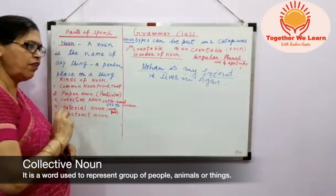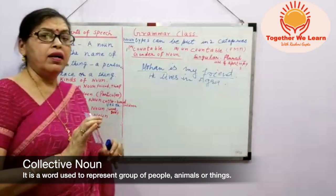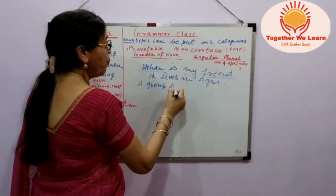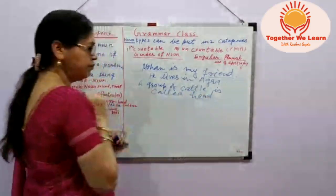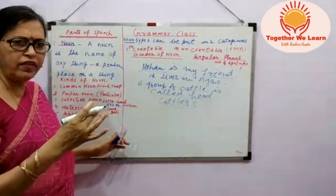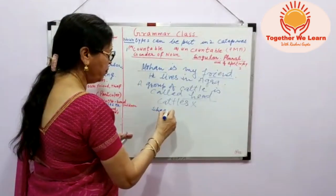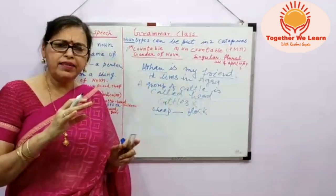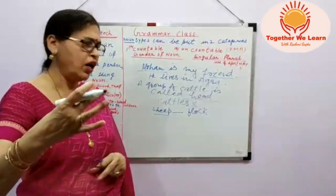Now I come to collective noun — that denotes a group. One thing you will remember: a group of cattle is called 'herd,' spelled H-E-R-D. I will not say 'cattles' — that will be wrong. Similarly, for sheep, spelled S-H-E-E-P, the group is called 'flock.' In some dictionaries the plural of sheep is also sheep, but the group is called flock.